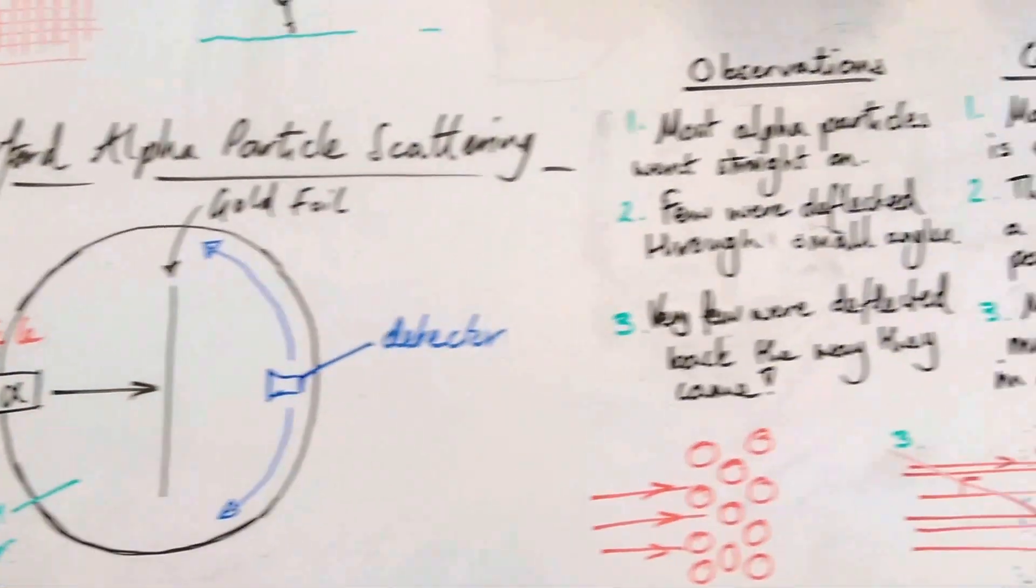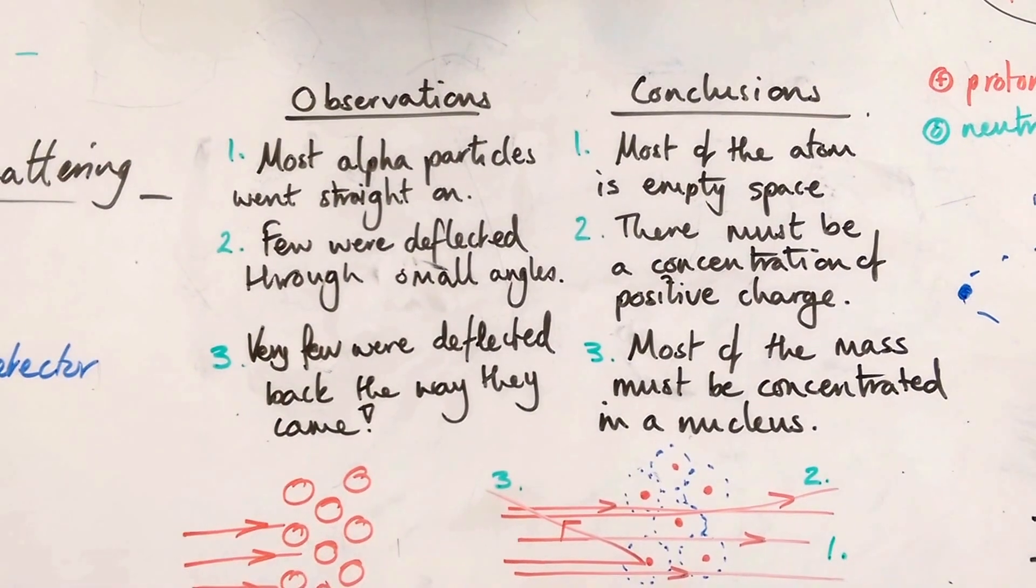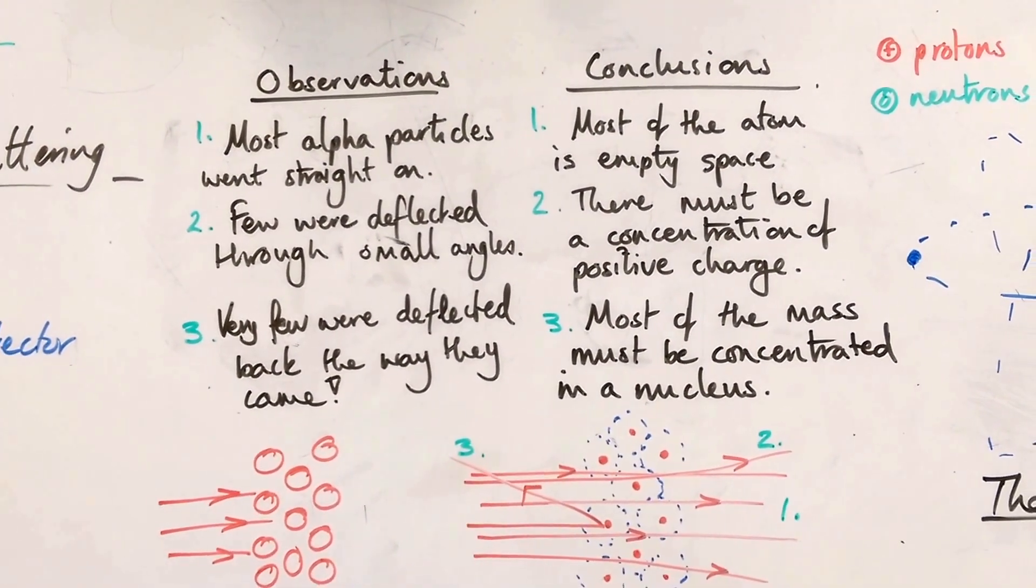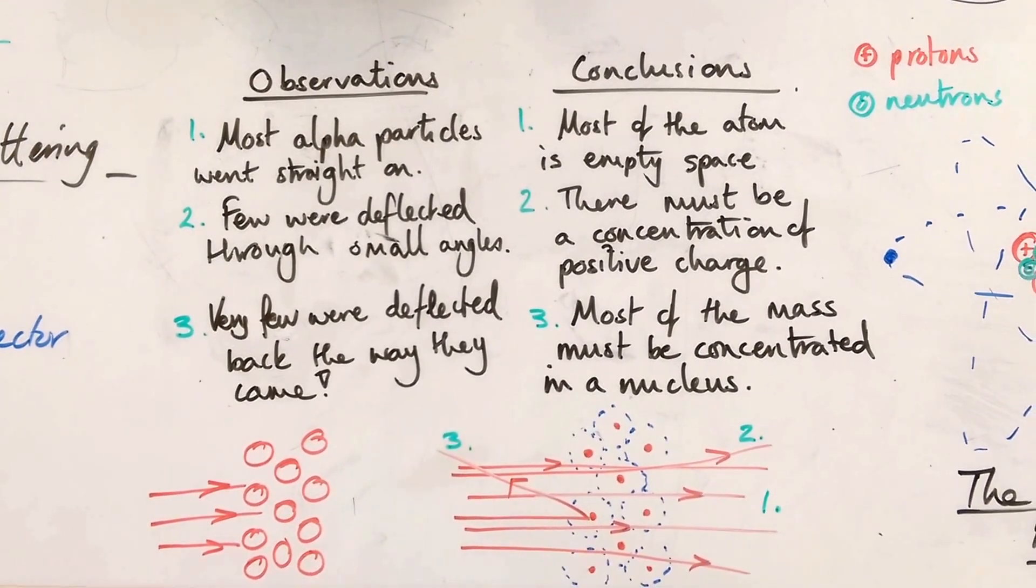So these three observations are what you're going to need to remember about the Rutherford alpha particle scattering experiment. And you should link them to the three conclusions that he made.